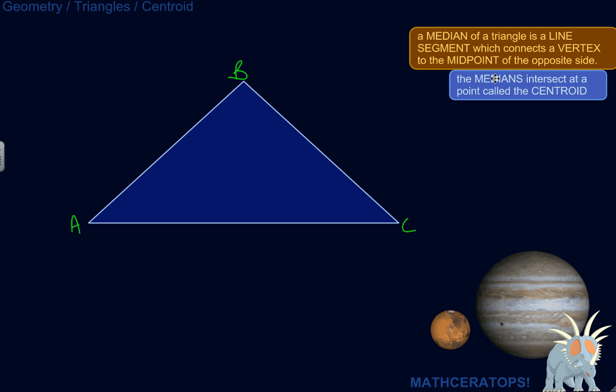Well, a median of a triangle is a line segment which connects a vertex. You know, one of the corners is a vertex. There's three vertices in a triangle. So it's a line that connects a vertex to the midpoint of the opposite side.